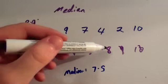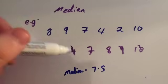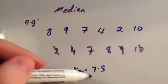Again, you could use the method of adding these two together. 7 plus 8 is 15, and half of that is 7.5. So the median, the middle number for this set of data, is 7.5.